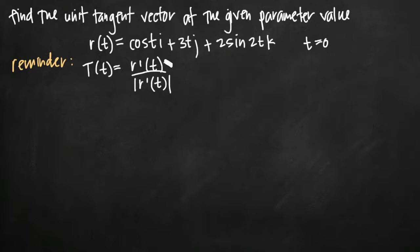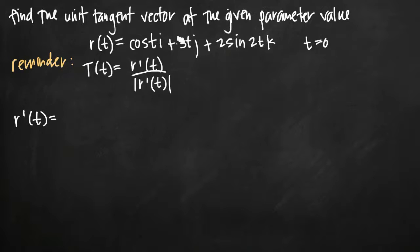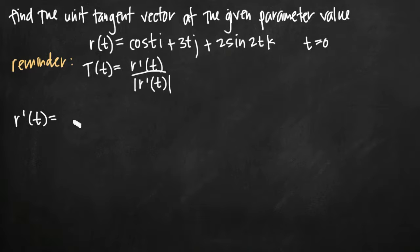On the right-hand side of our formula we have r prime of t, meaning the derivative of our vector equation r(t). We need to take the derivative and then evaluate it at t equals zero to get r prime of zero. When we take the derivative of a vector equation, we're only taking the derivative with respect to t — that is, the derivative of the coefficients on our i, j, and k values. The coefficient on i is cosine of t, and the derivative of cosine of t is negative sine of t, so we get negative sine of t times i.